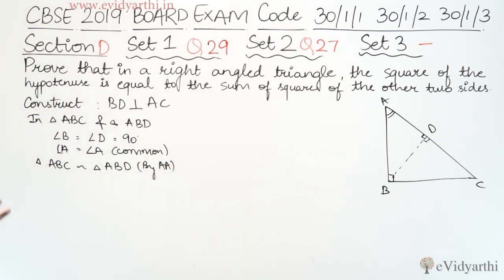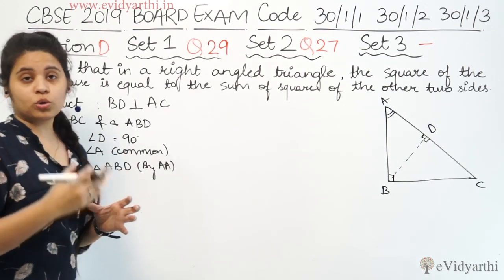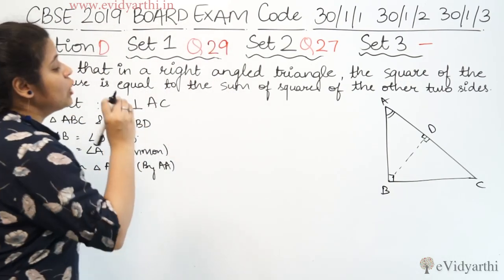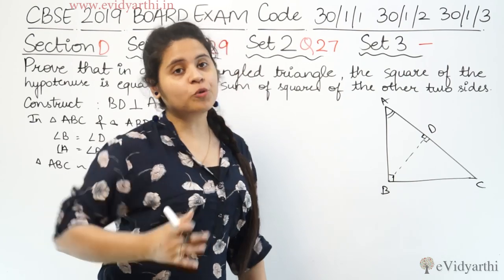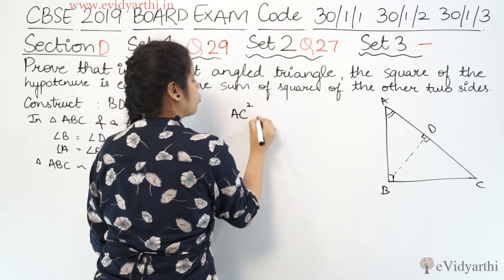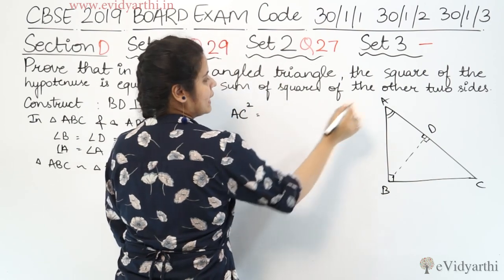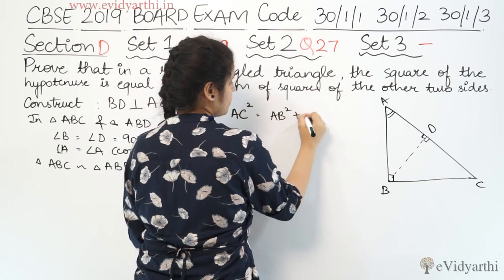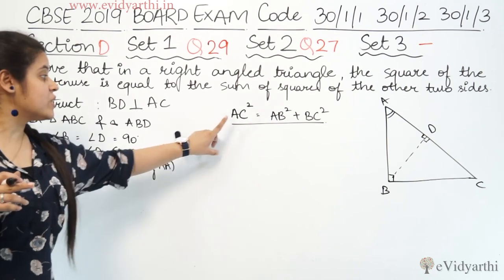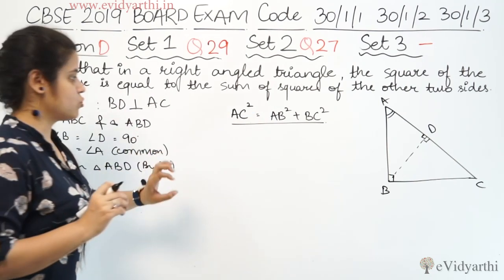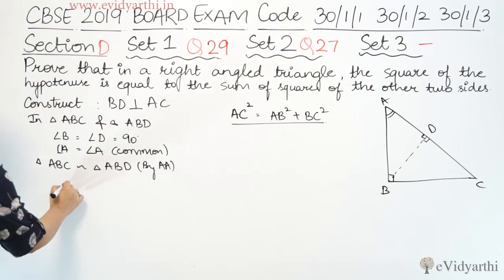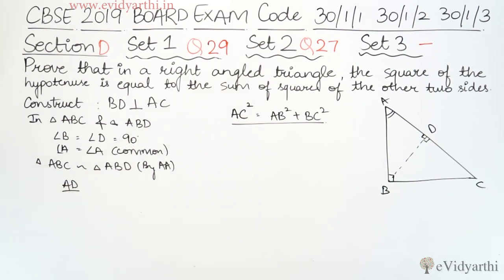अब अगर हमने इन दोनों triangles को similar prove कर दिया, तो हमें पता है कि जब दो triangles similar होते हैं तो उनकी sides proportional होती हैं. तो sides को इस तरह से लेना है कि जो हमें proof करना है उसमें help हो. ABC में AC hypotenuse है — AC का square बाकी दोनों sides के squares के sum के equal है, मतलब AB² + BC². तो corresponding sides लेंगे: AD/AB = AB/AC.